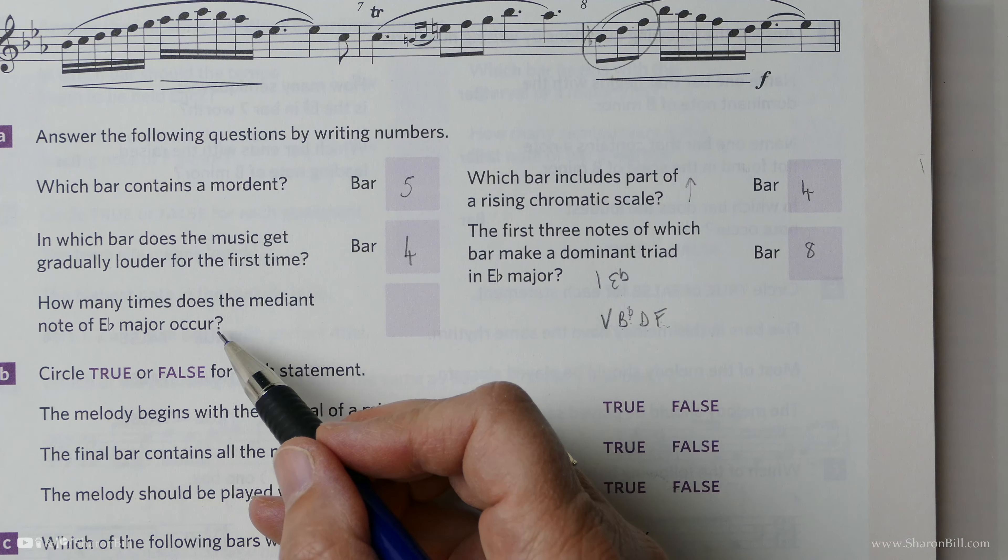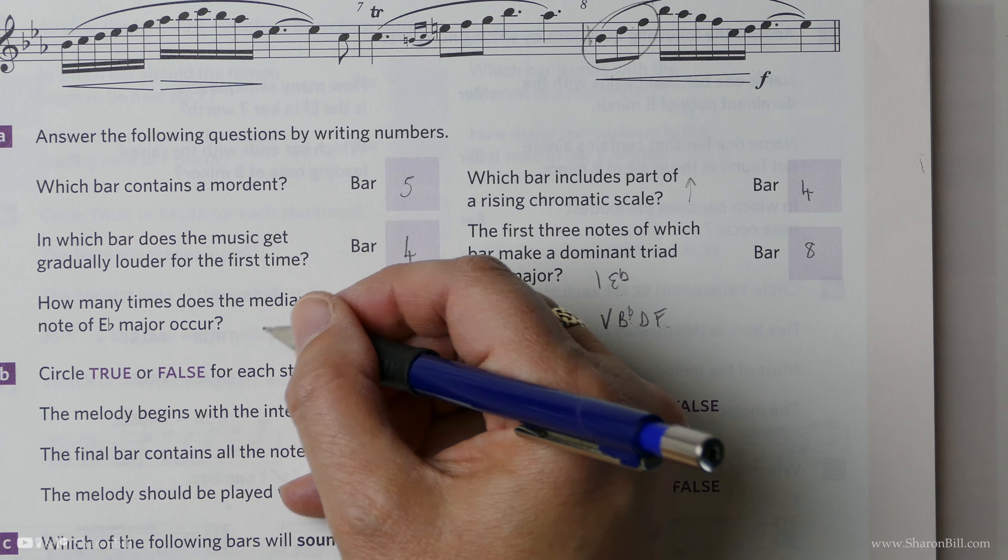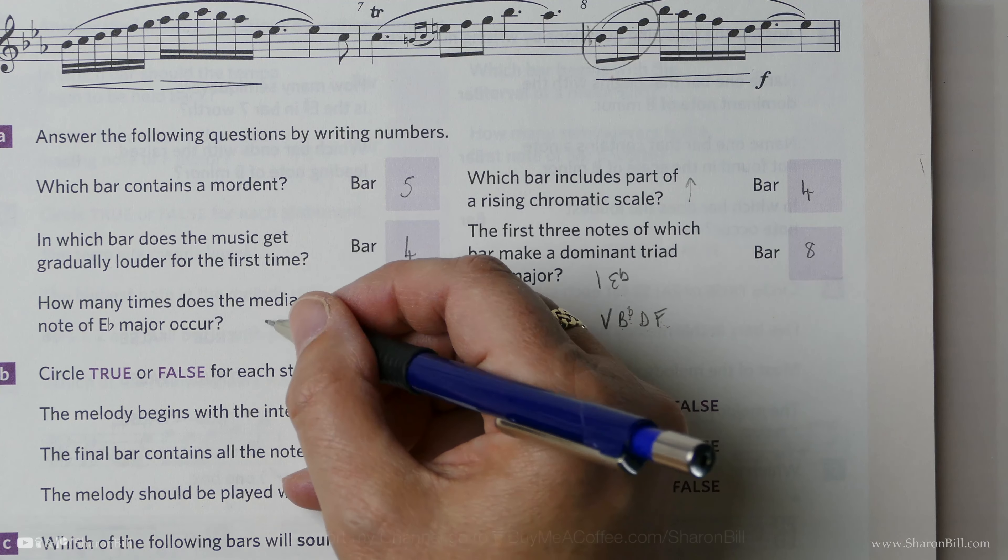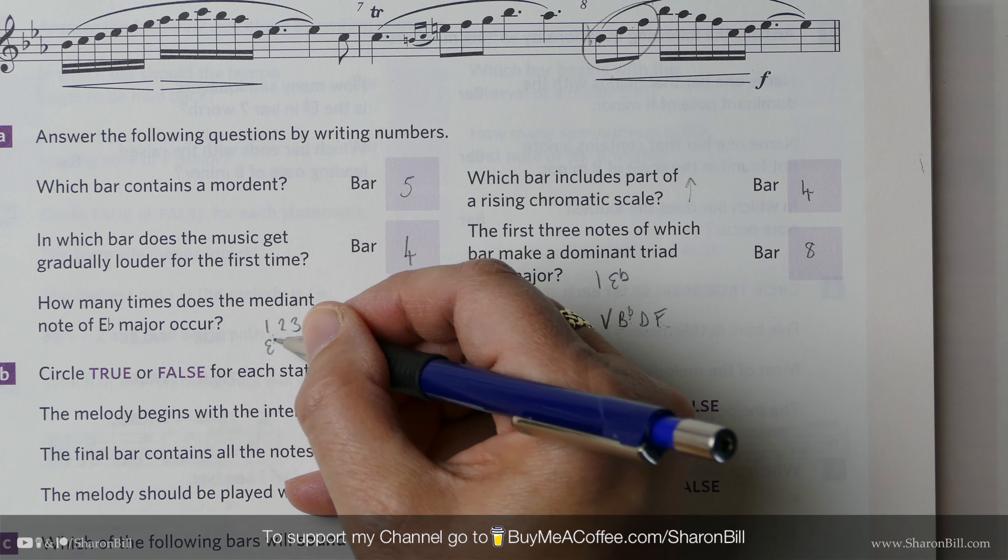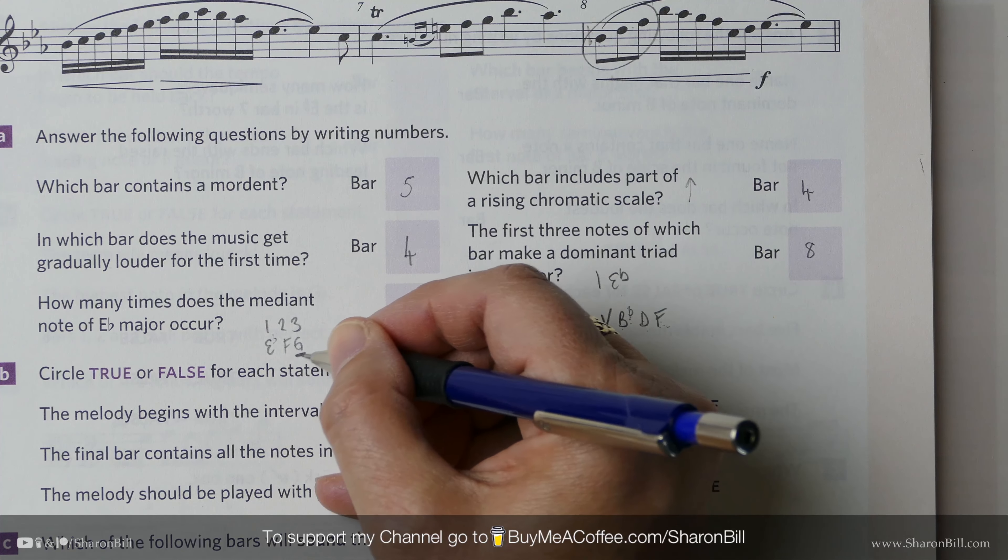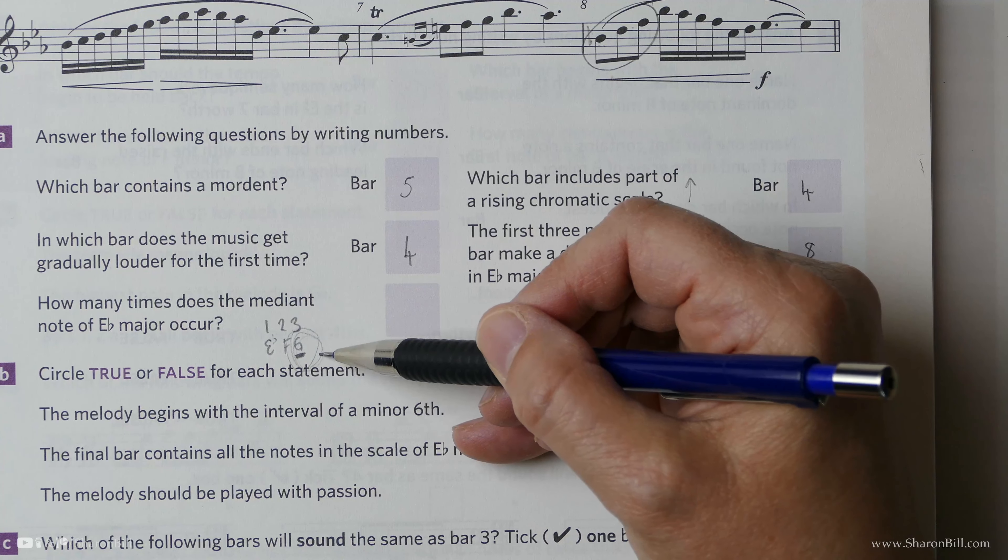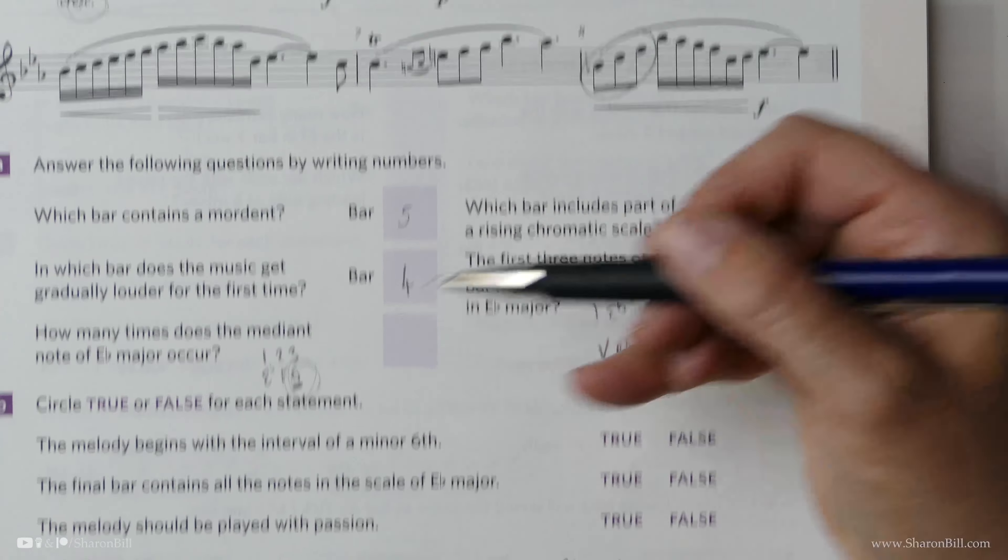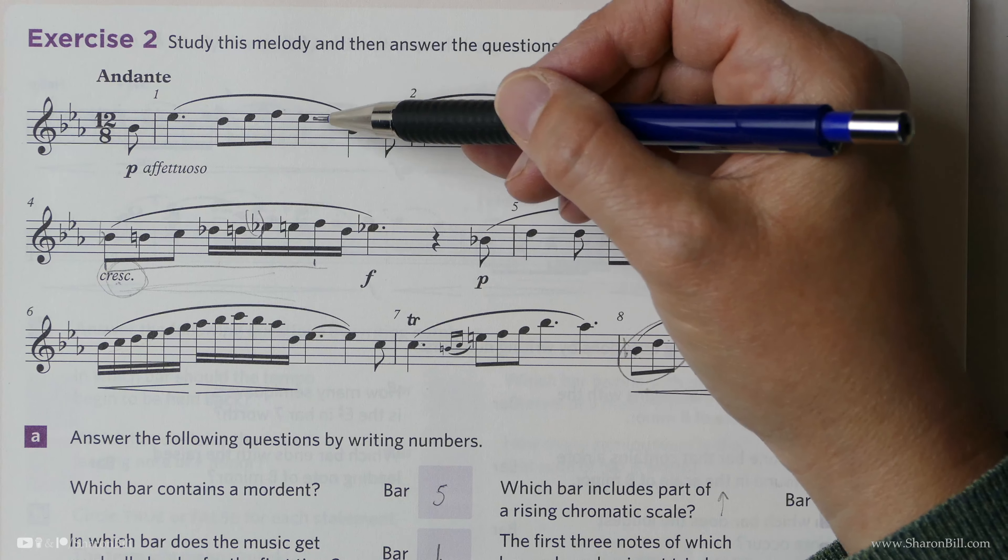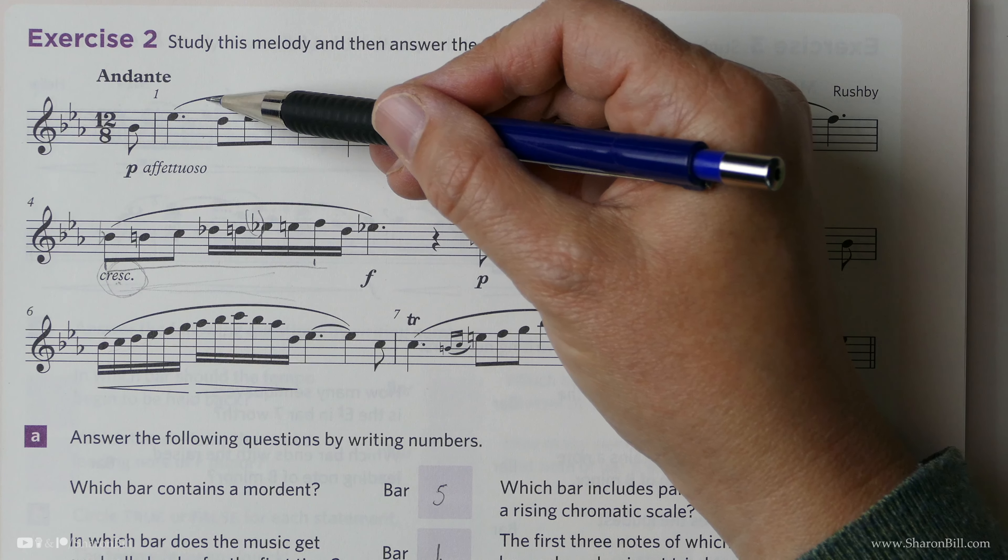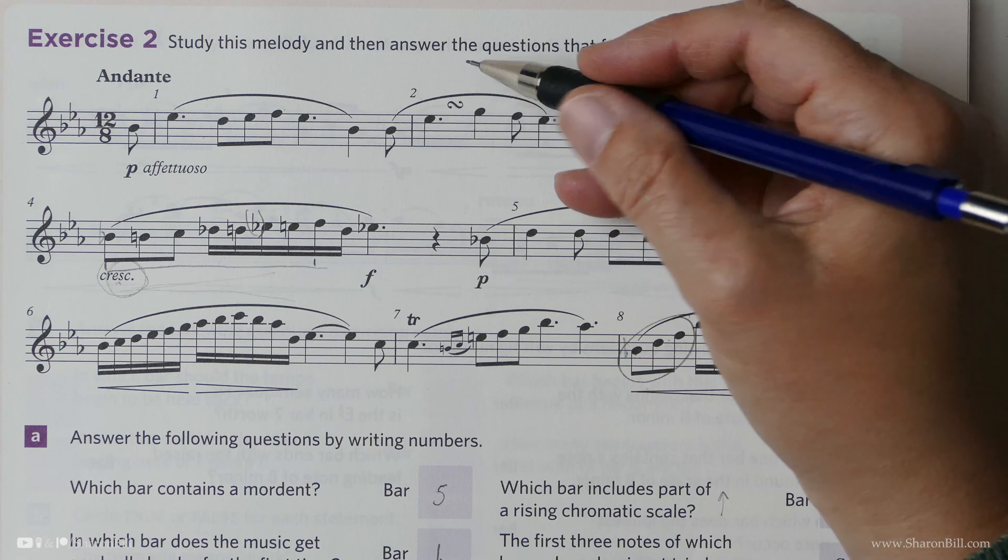Now, how many times does the mediant note of E-flat major occur? So the mediant, if you remember, is the third. So one, two, three. If E-flat is the first, the key signature will deal with that. F, G is the third. So how many times does note G occur? Let's see. And bear in mind, that can be in any octave. So we're looking for a G here, a G up here, or even way below middle C. Let's see what we can find.